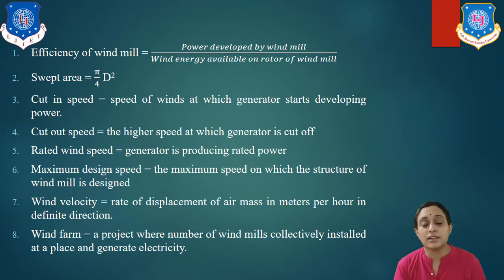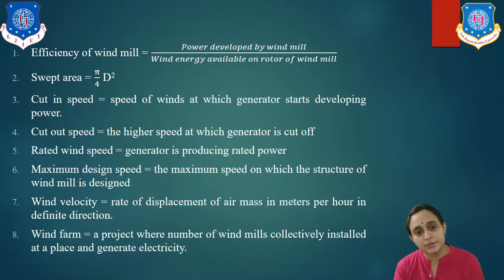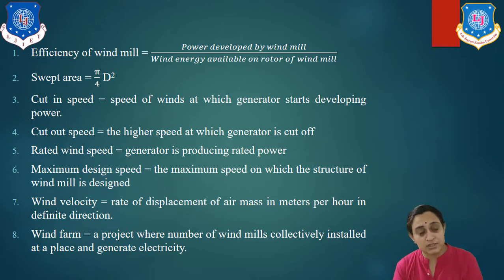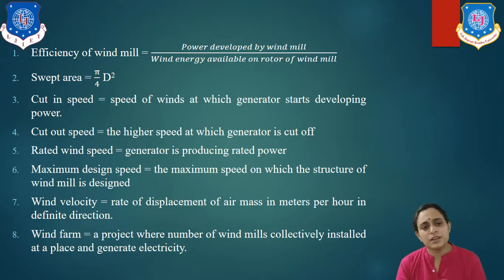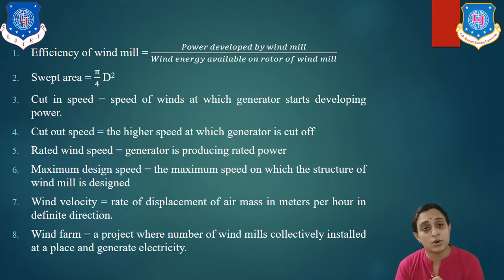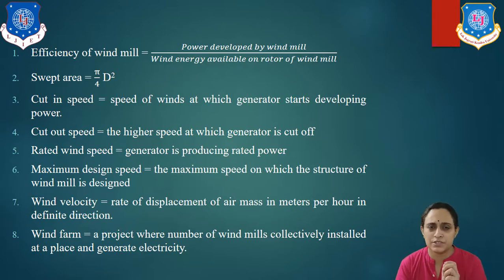Now let us look at cut-in speed. Cut-in speed is the speed of wind at which the generator starts developing power. A certain minimum speed of rotation is required for generating electricity because there are many losses, so the minimum speed required is known as cut-in speed.